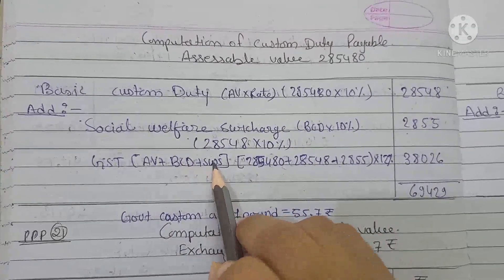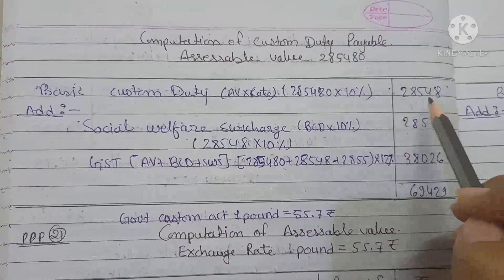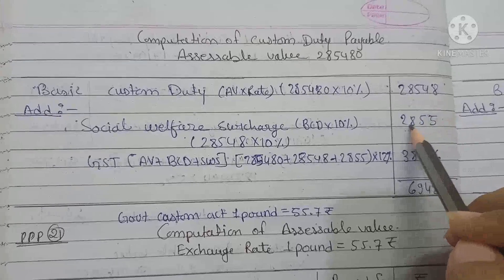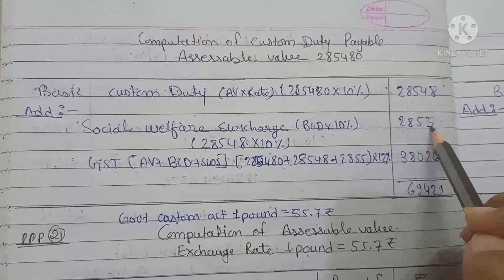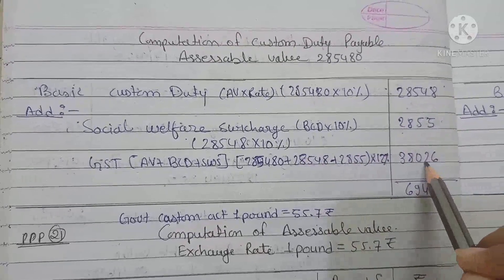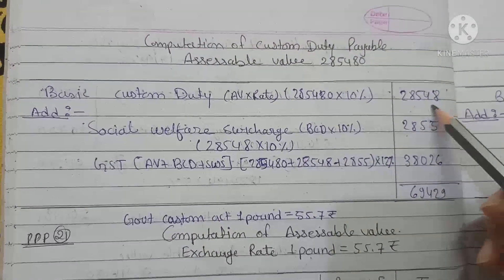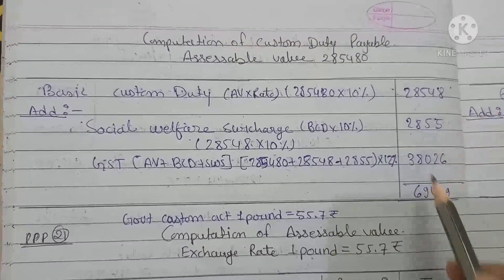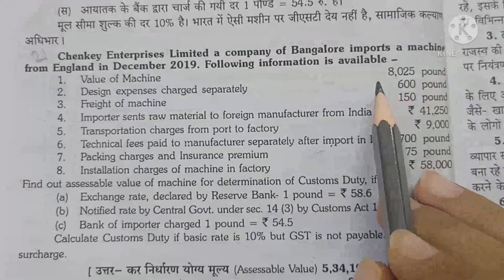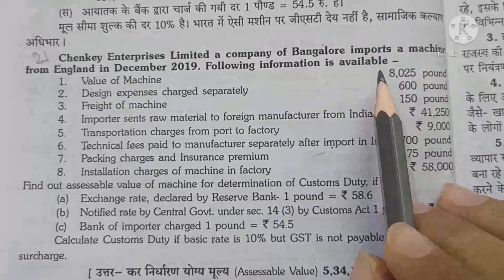For IGST, the base is assessable value plus basic customs duty plus social welfare surcharge: ₹2,85,480 + ₹28,548 + ₹2,855. At 12%, we get ₹38,026. This completes the custom duty payable for question number 20.